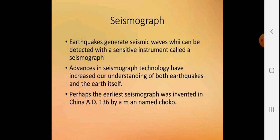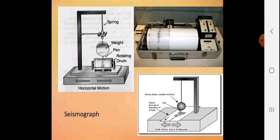The seismograph: Earthquakes generate seismic waves which can be detected with sensitive instruments called seismographs. Advanced seismograph technology has increased our understanding of both earthquakes and the earth itself. Perhaps the earliest seismograph was invented in China, AD 136, by Zhang Heng. This is the basic instrument of how the seismograph looks and it creates the image in the form of waves.